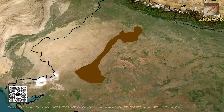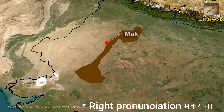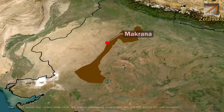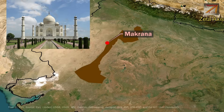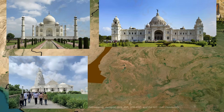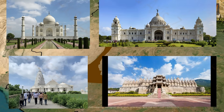The Aravalli mountain range is also a rich source of marble. Makrana, a region located in the central Aravalli range, is a major source of marble. The marble from Makrana was used in the construction of the Taj Mahal, the Victoria Memorial in Kolkata, the Birla Temple of Jaipur, and the Jain Temple of Dilwara in southern Rajasthan.